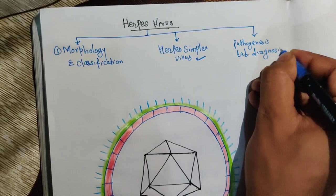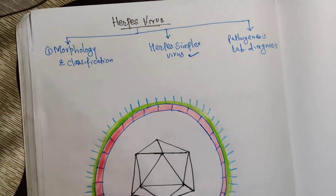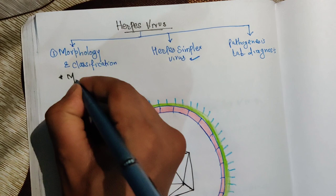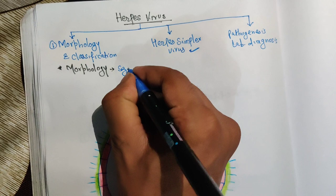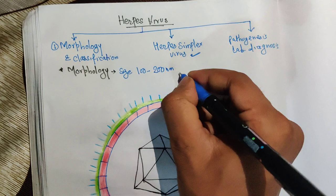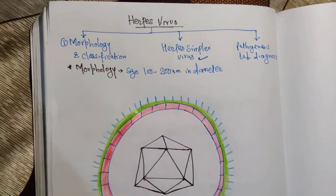Let's start with the morphology of herpes viruses. These are small viruses; the size may be in between 100 to 200 nanometers in diameter. I have made a big diagram here, but the actual size of herpes viruses is very small — 100 to 200 nanometers in diameter.